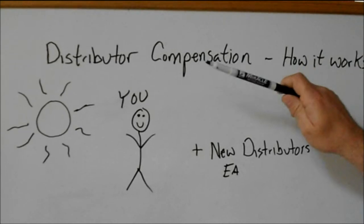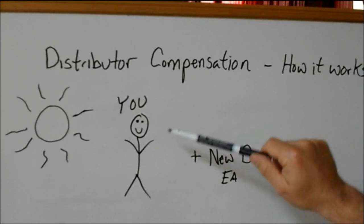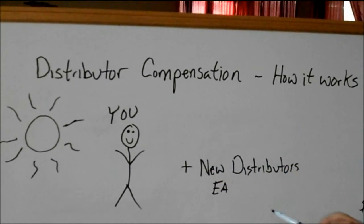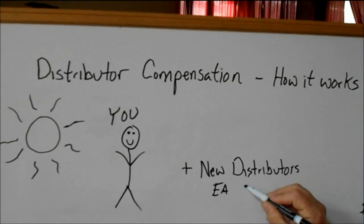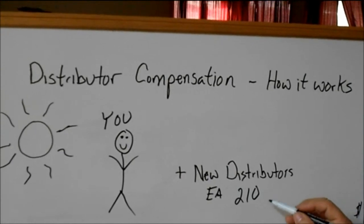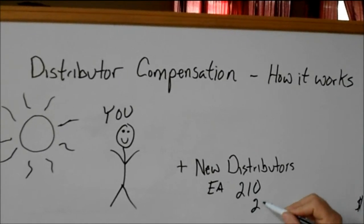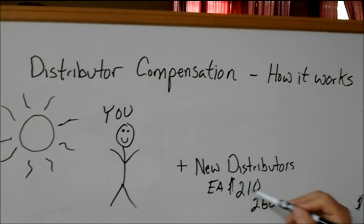We're going to show you some other ways that you make money as a Protanin distributor and a True Science distributor. This is you. Each new distributor that you bring in, you make $210 for the first three new distributors that you bring into your organization, and then on the fourth one you make $260.